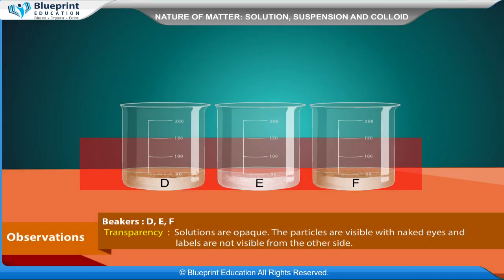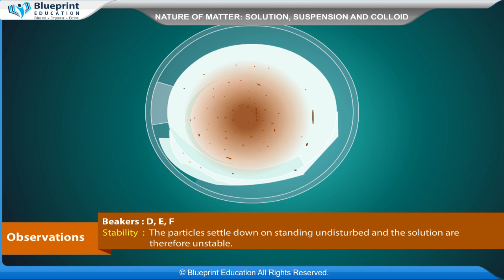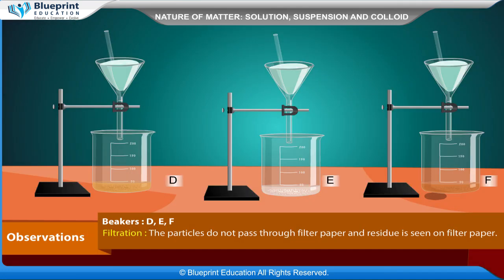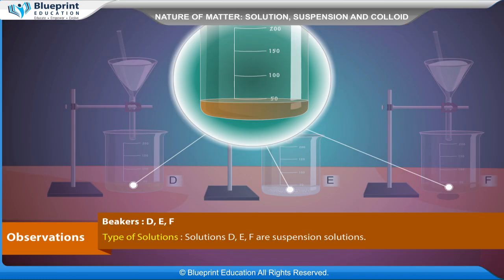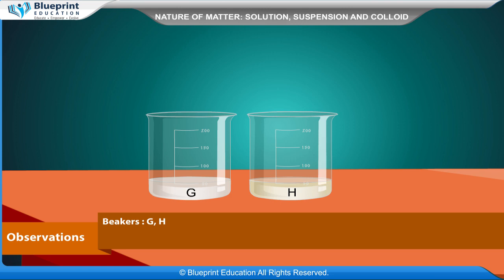Beakers D, E, F: Transparency: The solutions are opaque; particles are visible with naked eyes and labels are not visible from the other side. Stability: The particles settle down on standing undisturbed, so the solutions are unstable. Filtration: The particles do not pass through filter paper and residue is seen on filter paper. Solutions D, E, F are suspensions.